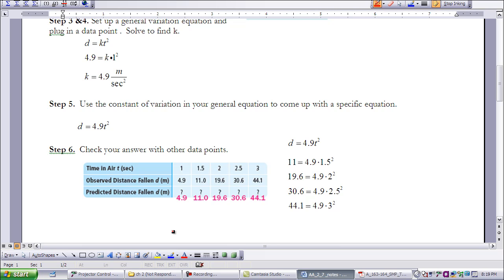Then the last step that we're going to do is we're just going to check our answer with other data points. So here we have time in the air, the distance that the ball has fallen, and then what would that be if we used our model? So if we insert 1 in place of t, well, we've already done that. That's going to be 4.9. But if I insert 1.5 in place of t, I get 11.